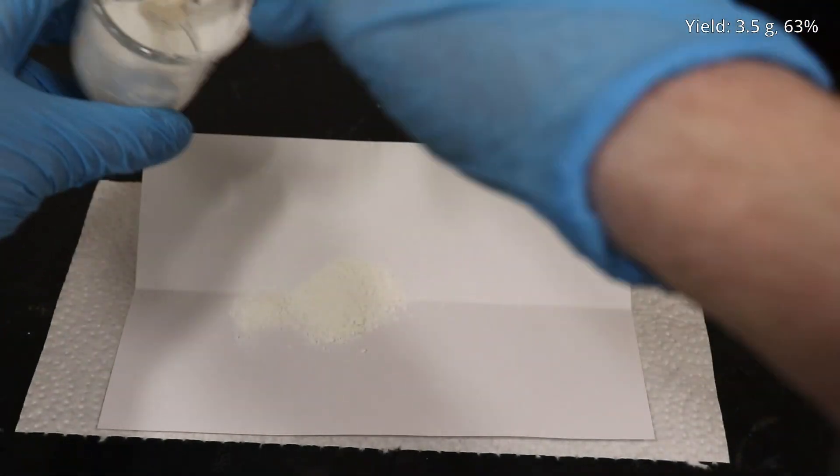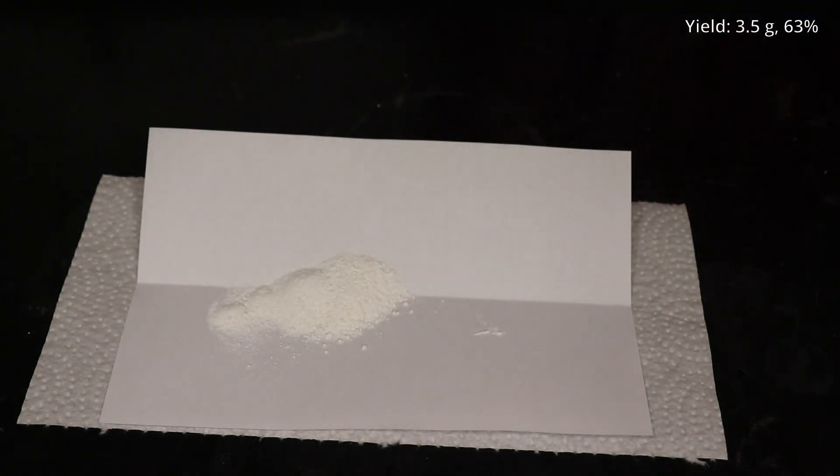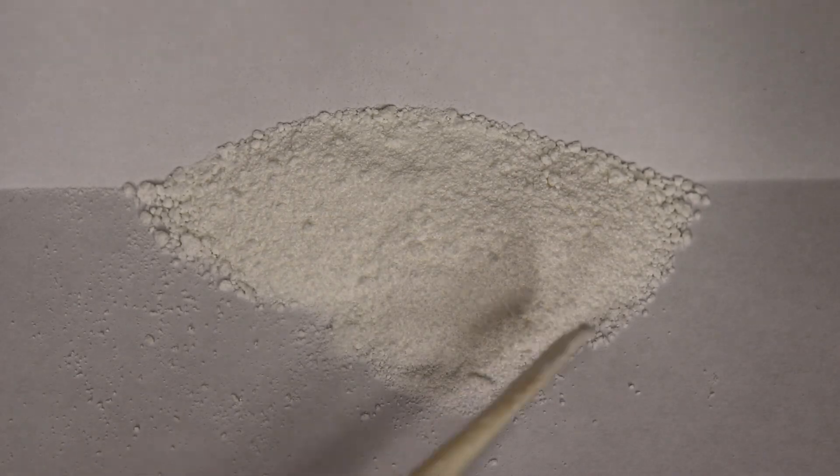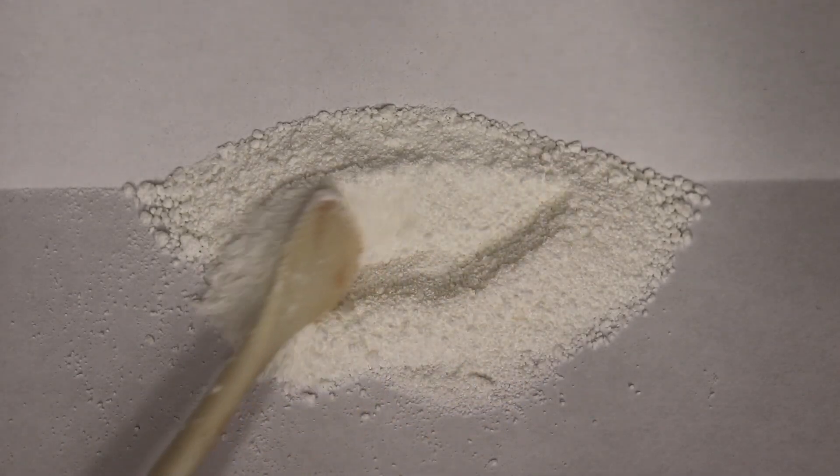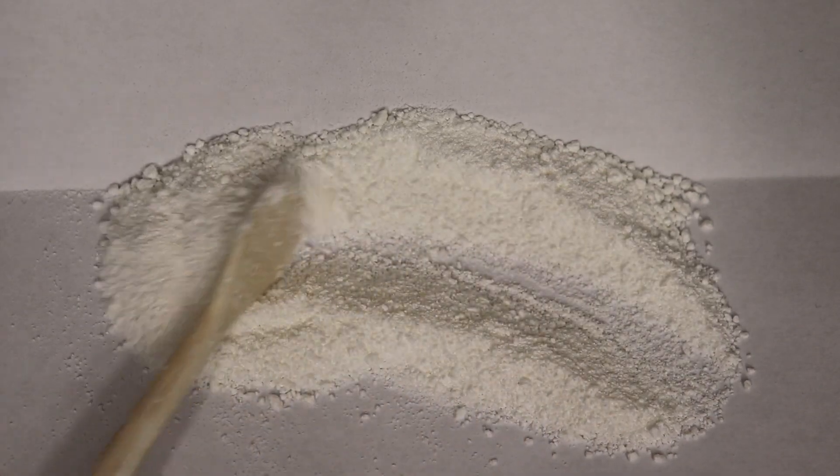A total of 3.5 grams of cholesterol acetate was obtained as a fluffy white powder. This corresponds to a 63% yield, which is lower than one would hope. However, most of the yield loss was likely during all of the washing steps, which in the end would contribute to a higher purity product and a lower yield.